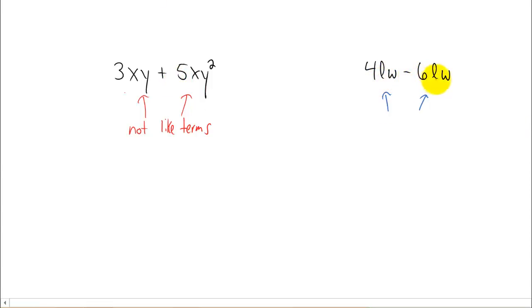However, 4lw minus 6lw. Now those two terms are like terms. They have the same variables, l and w, and the same powers on those variables. They're both 1.